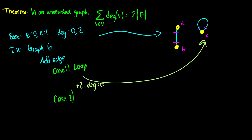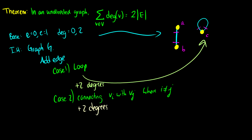Case two is connecting vertex vi with vj where i is not equal to j — that is, it's not a loop. Again you get plus two degrees. So because the base case is even and the inductive hypothesis keeps it even, it's always going to be two times the number of edges, because you add one edge and get plus two degrees. So the sum of the degrees is equal to two times the number of edges.